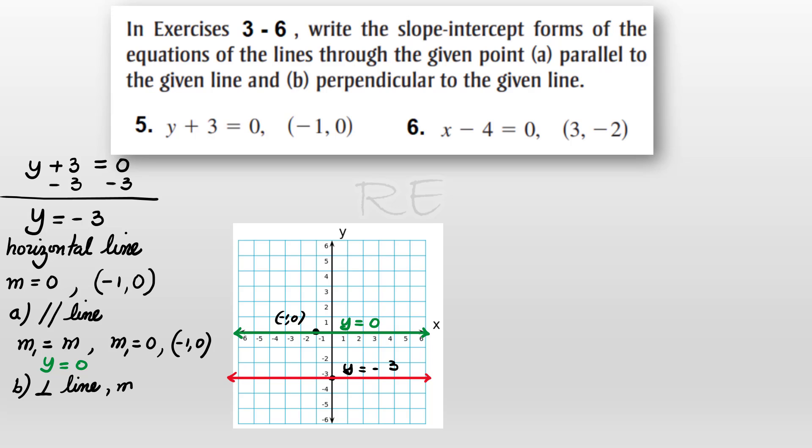Now, for the perpendicular line to y equals negative 3, since the given slope is 0, the slope of the perpendicular line must be undefined. So the perpendicular line must be a vertical line.